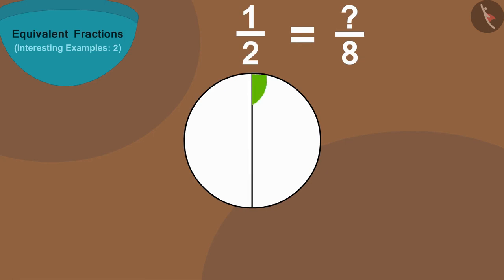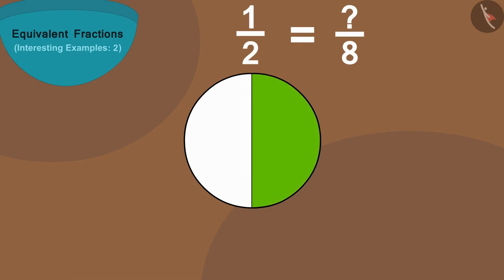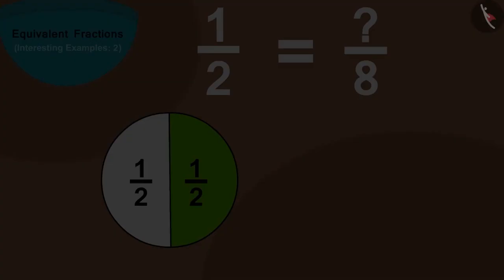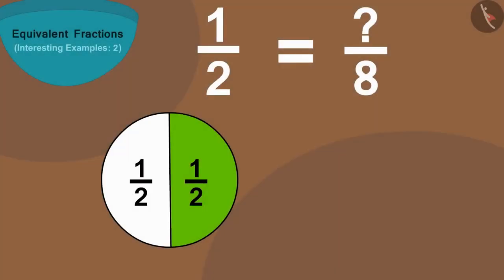And fill color in one part, then we can write the colored part of the circle in the form of a fraction as one by two. Now in this fraction, the number eight shows how many parts of something are made.